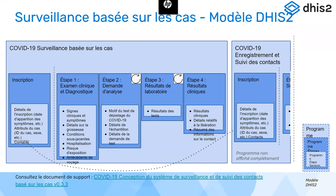On peut faire plusieurs tests par rapport à la personne, donc il y aura des étapes répétitives. Je pense que Diary aussi va revenir sur ces points — qu'est-ce que nous appelons attributs, qu'est-ce que nous appelons tracking entity instance — ce sont des termes que Diary va développer juste après moi.